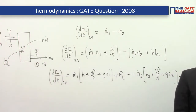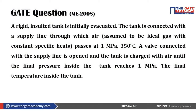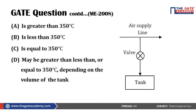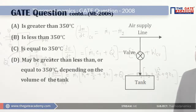Looking at the question — this question was asked in Gate 2008 Mechanical paper for two marks. A rigid insulated tank is initially evacuated. Then the tank is connected with a supply line through which air passes at 1 MPa and 350°C. A valve connected with the supply line is opened and the tank is charged with air until the final pressure inside the tank reaches 1 MPa. The options for final temperature are: greater than 350°C, less than 350°C, equal to 350°C, or may be greater than, less than, or equal to 350°C depending upon the volume of the tank.